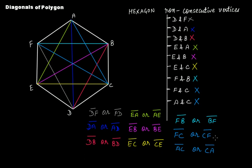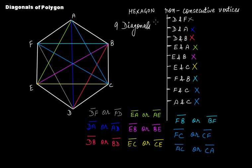So how many diagonals do we have? One, two, three, four, five, six, seven, eight, and nine. In the case of a six-sided polygon — that is, a hexagon — you have nine diagonals.